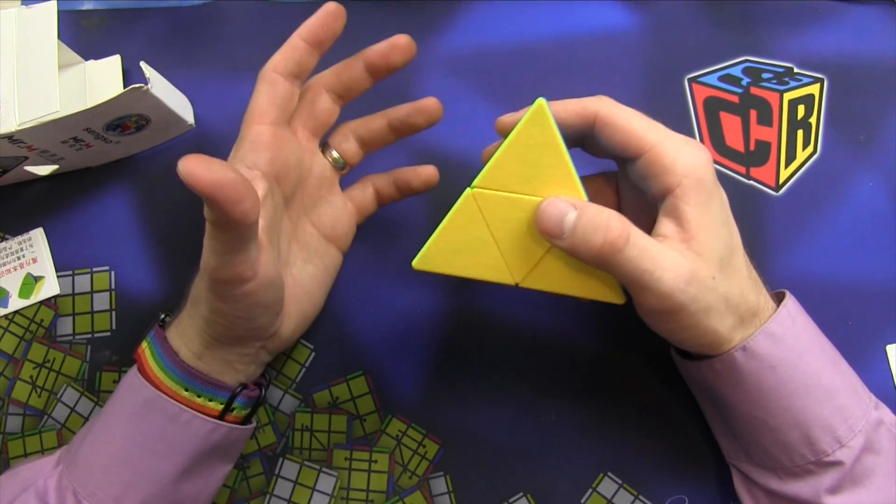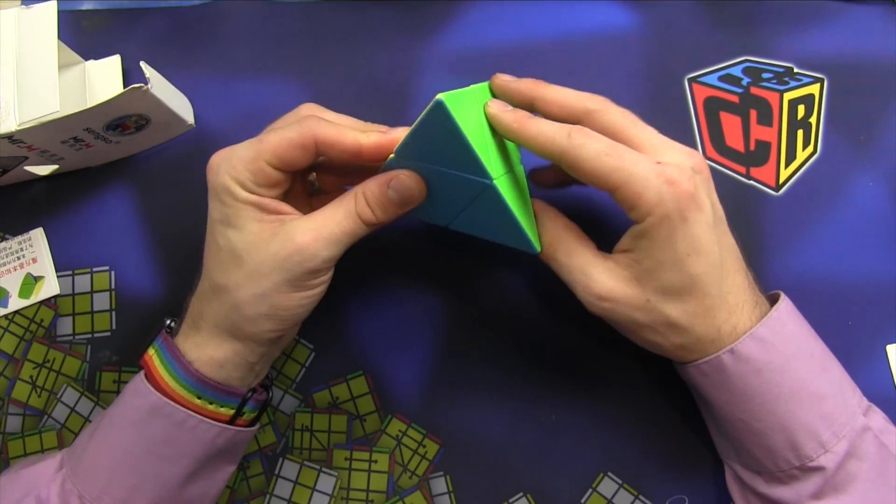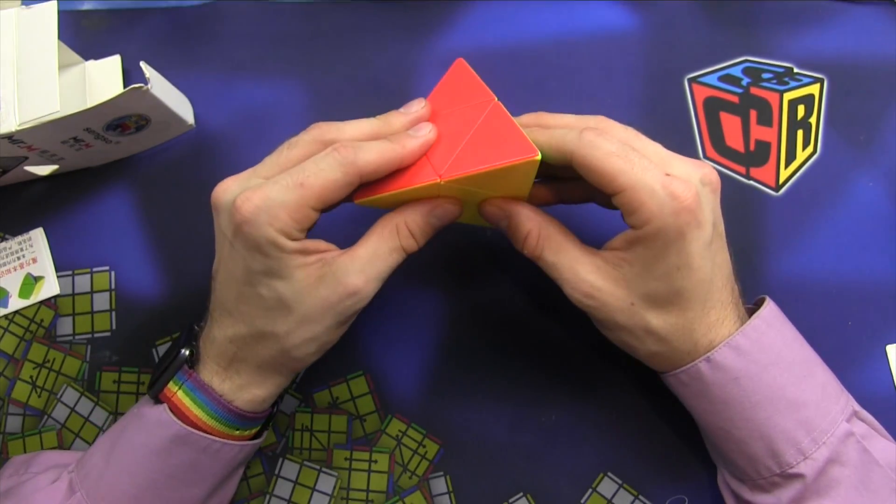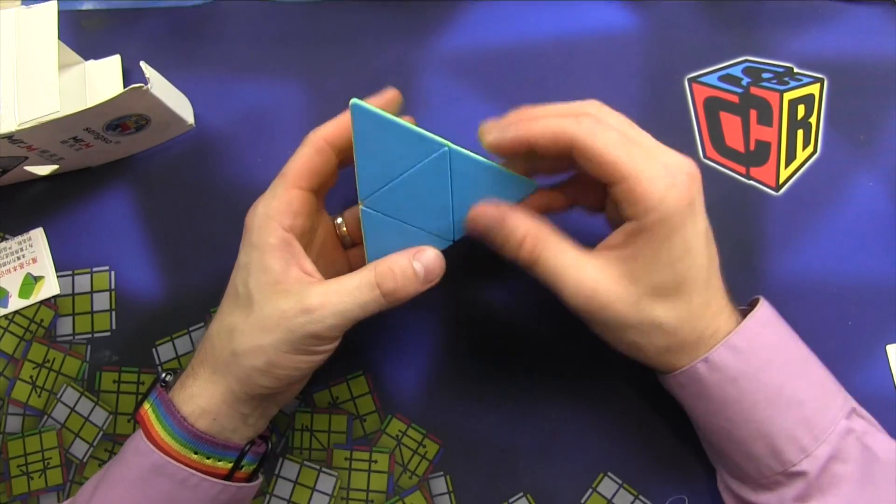Often you see it cut into the shape where it's rounded just like you have a mastermorphix. These can be tricky to solve, it's just a two by two and it can seem actually easier because these four corners can be twisted any which way.